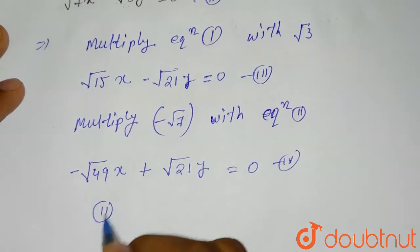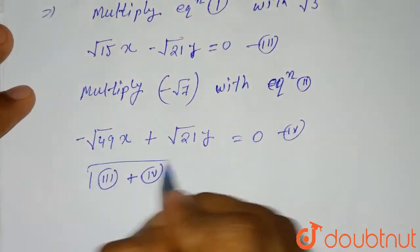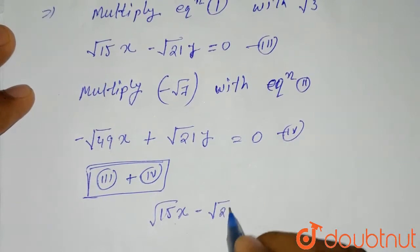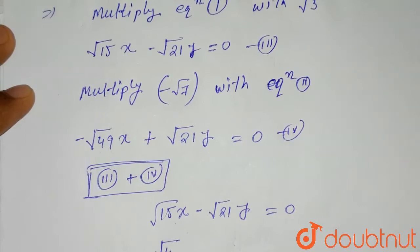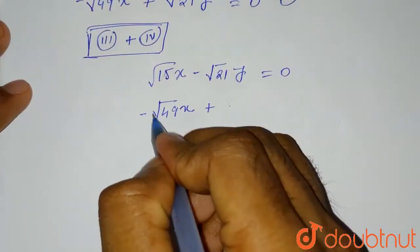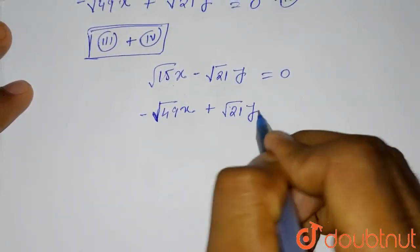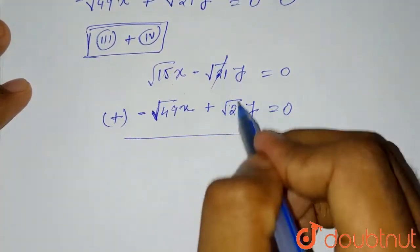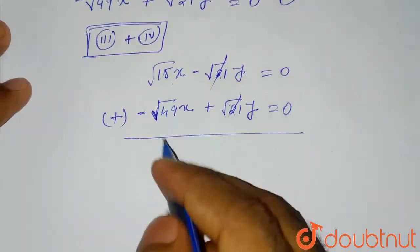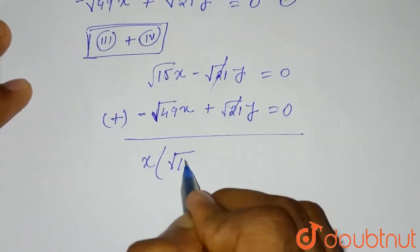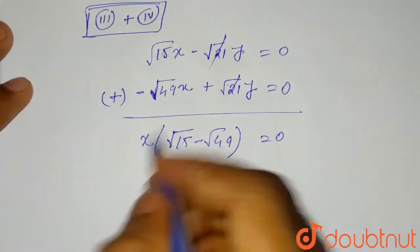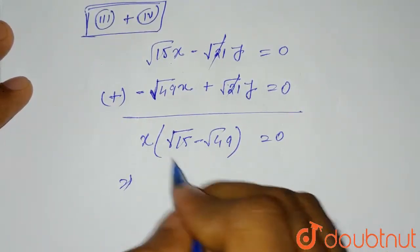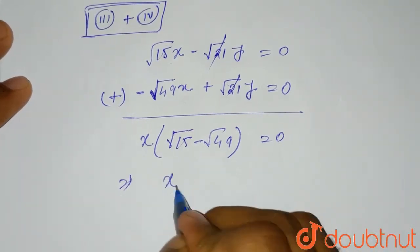Now if we add both equations 3 and 4, we get: root 15 X minus root 21 Y equals 0, and minus root 49 X plus root 21 Y equals 0. After adding, minus root 21 Y and plus root 21 Y cancel out. Taking X common, we get X times (root 15 minus root 49) equals 0. So X equals 0 divided by something, which means X is equal to 0.